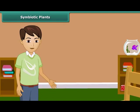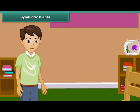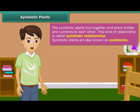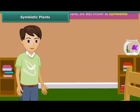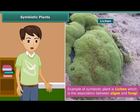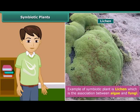Have you ever heard about symbiotic relationships? The relationship between two dissimilar organisms in which both live together and share shelter and nutrients with each other is called a symbiotic relationship. The organisms involved in this kind of relationship are called symbionts. Lichen is a good example of a symbiotic relationship. Lichen is the association between algae and fungi. In this relationship, algae provide food to fungi, and fungi provide protection, absorbed water, and minerals to algae.